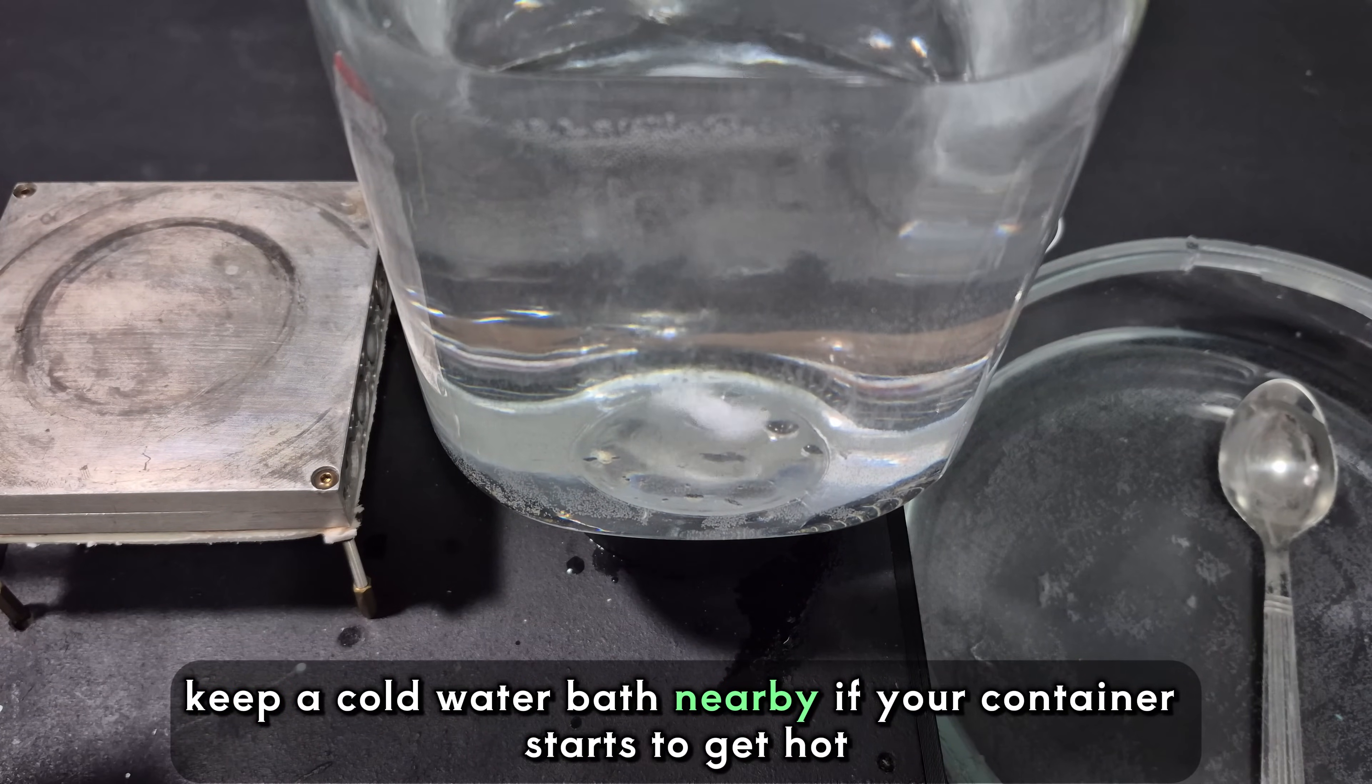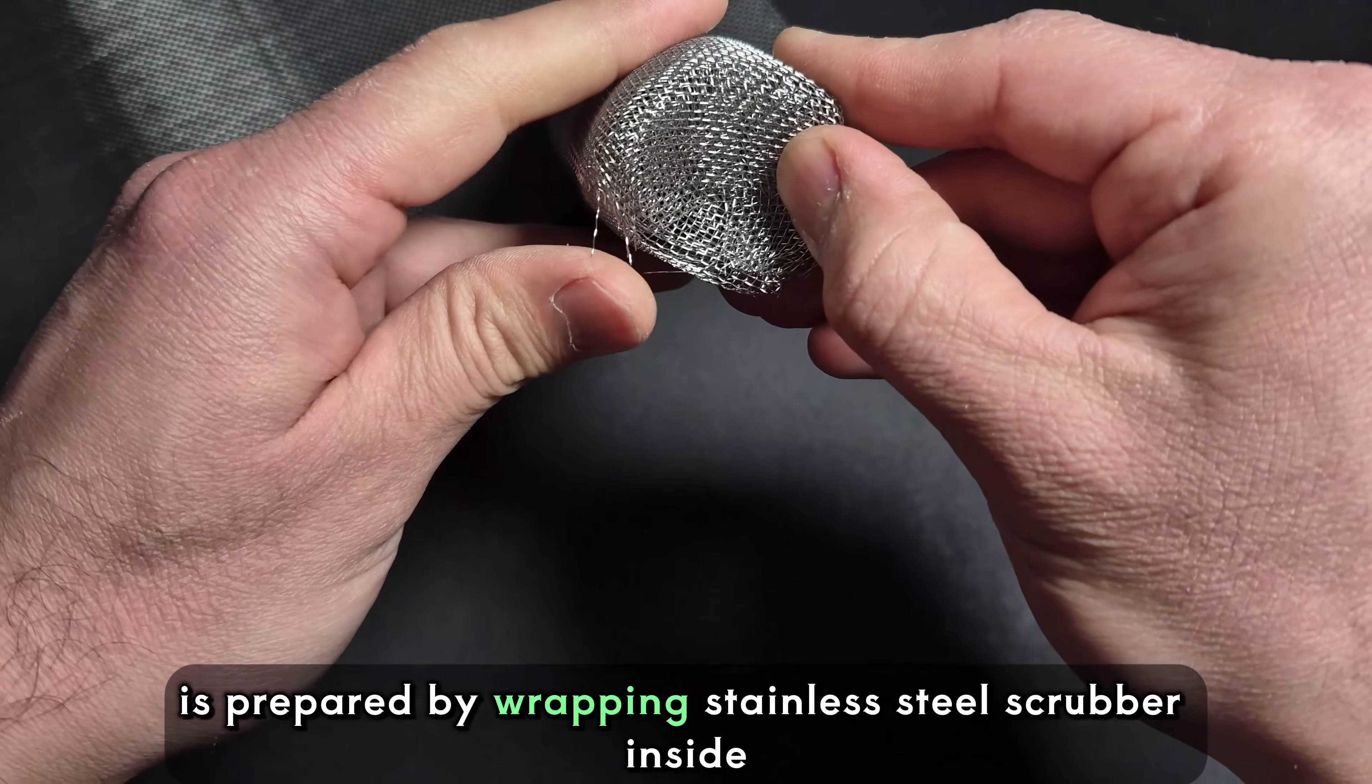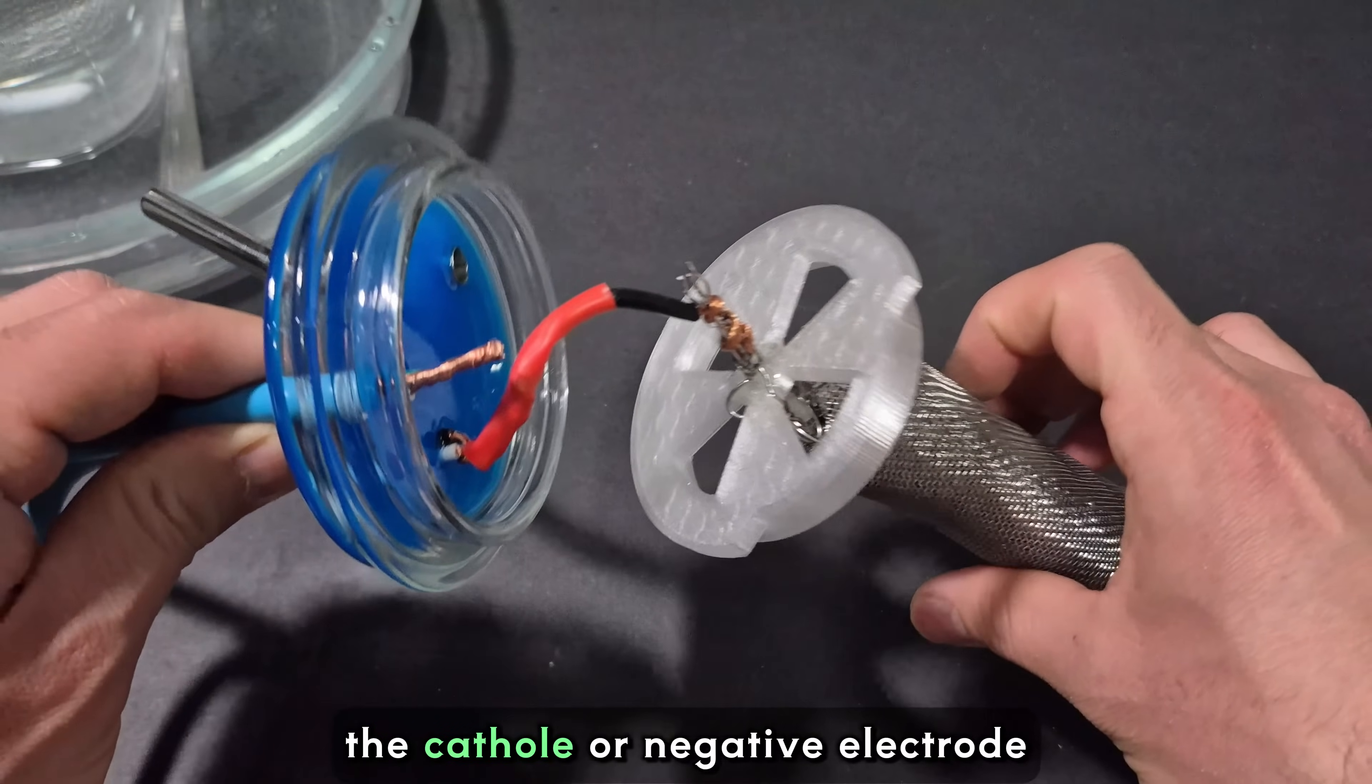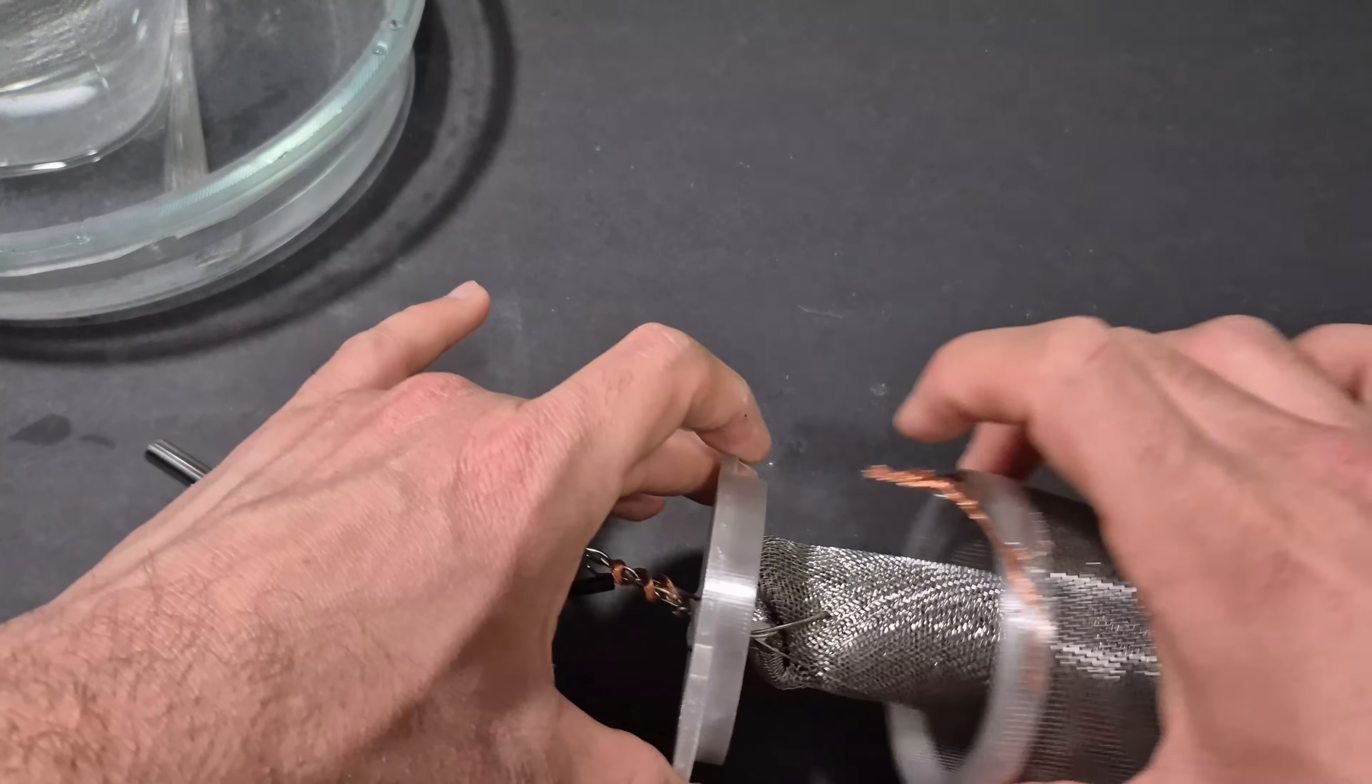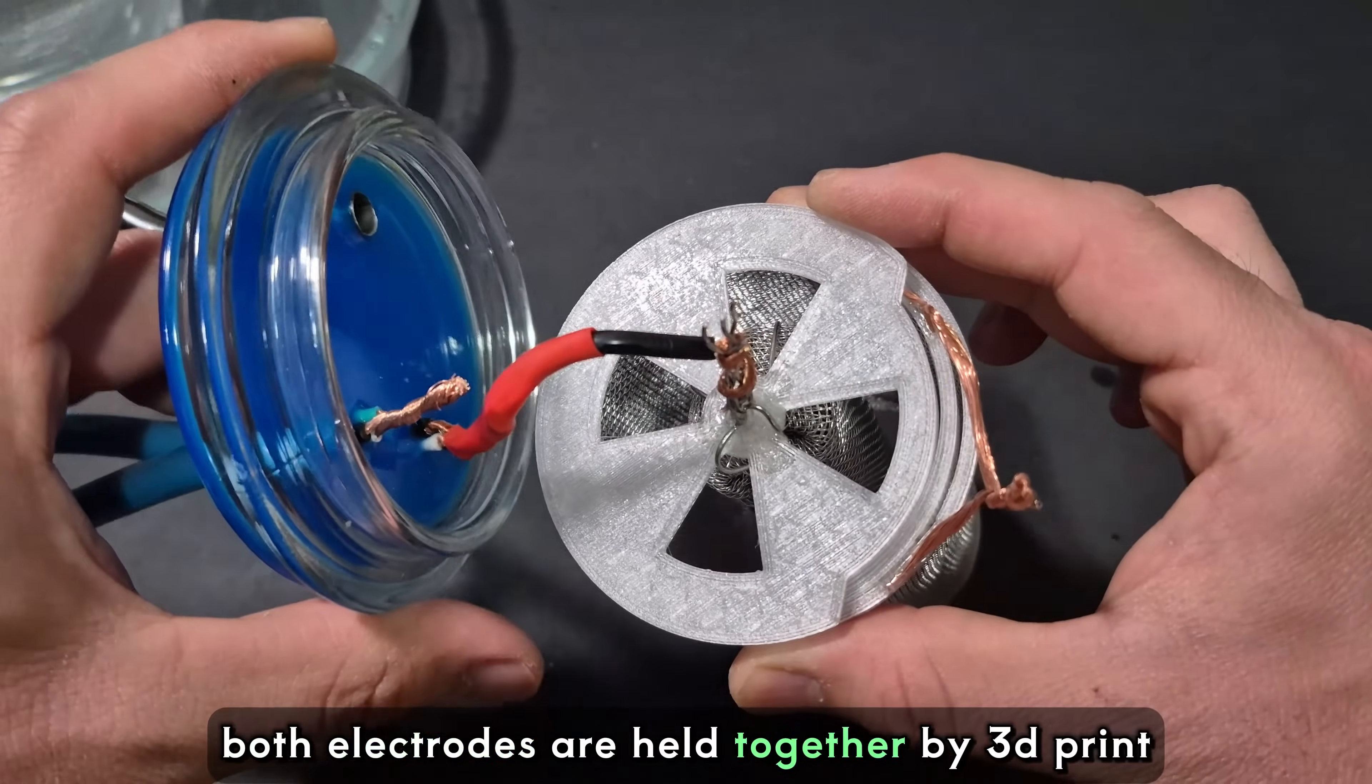The anode, or positive electrode, is prepared by wrapping stainless steel scrubber inside stainless steel 20 mesh. The cathode, or negative electrode, is just two layers of stainless steel 20 mesh. Our goal here is to increase surface area as much as possible. Both electrodes are held together by 3D print.